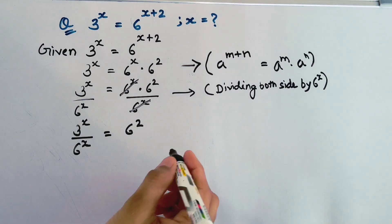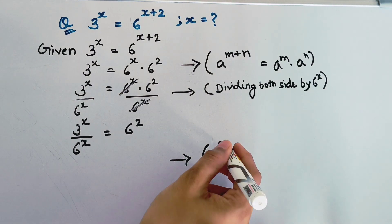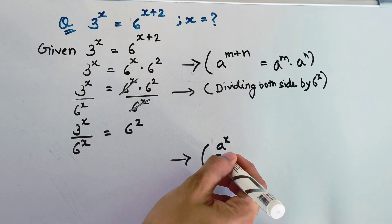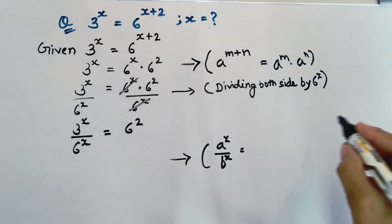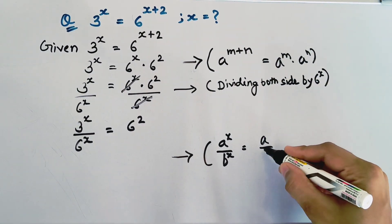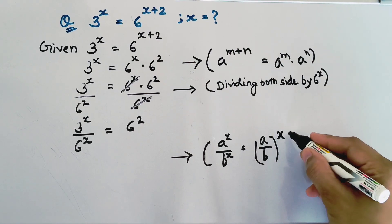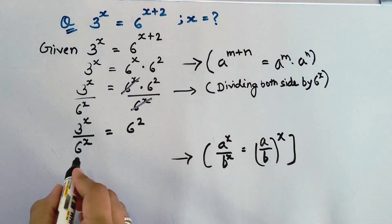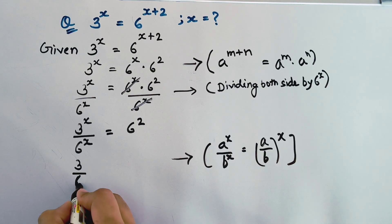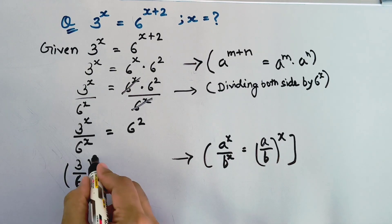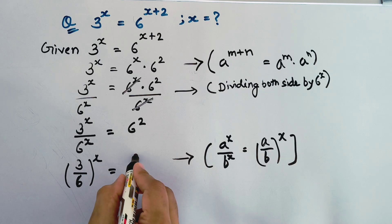Now, we have another rule of exponent: a to the power x divided by b to the power x equals a divided by b, whole to the power x. So, 3 divided by 6, whole to the power x, equals 6 squared.